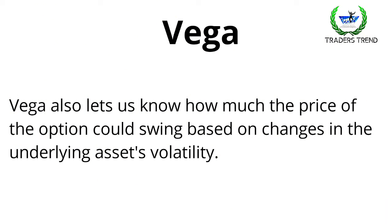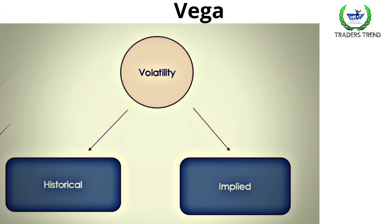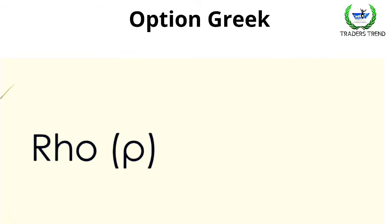Vega also tells us how much the price of the option could swing based on changes in the underlying asset's volatility. Volatility is divided into historical volatility and implied volatility.